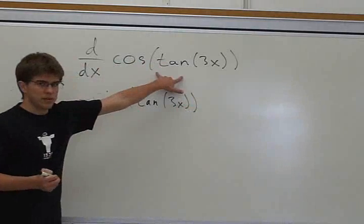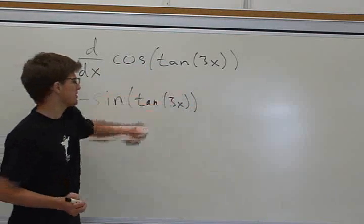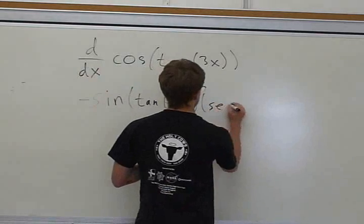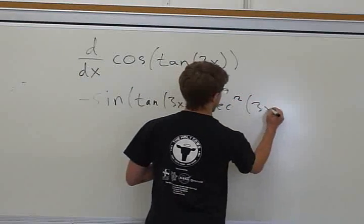And then we need to multiply it by the derivative of the next inside function, which is secant squared of 3x.